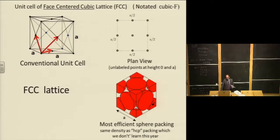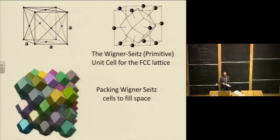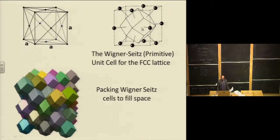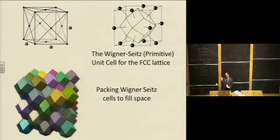Just as with BCC, we don't use the primitive unit cell for FCC because it's ugly — it's a truncated dodecahedron with 12 sides. Those 12 sides correspond to the 12 nearest neighbors: four slightly above, four at the same height, and four slightly below. The faces are perpendicular bisectors of the segments to the nearest neighbors.